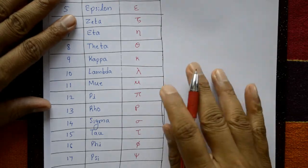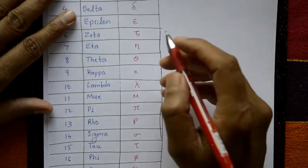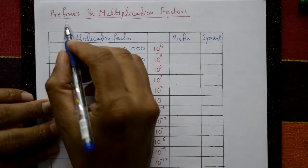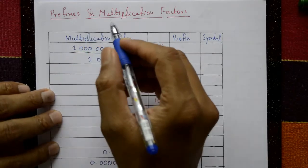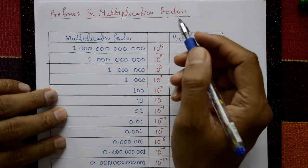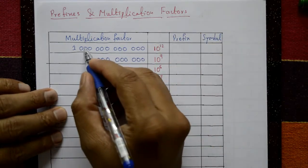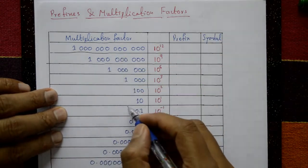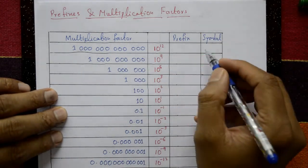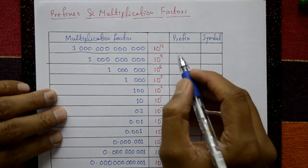So these alphabets are used in mathematics. Now, prefixes and multiplication factors — these are the multiplication factors, their prefix, and symbol.